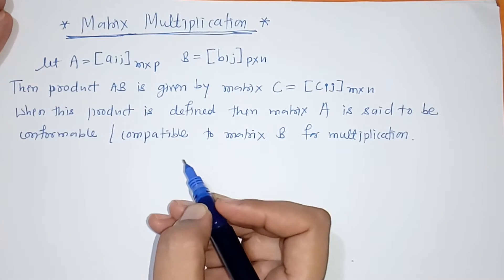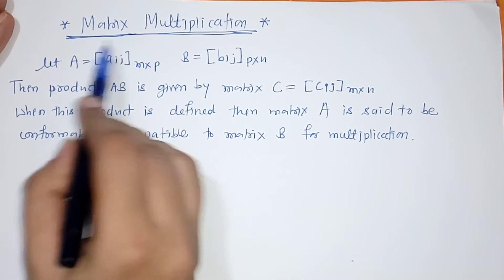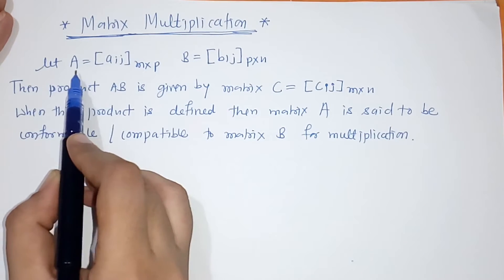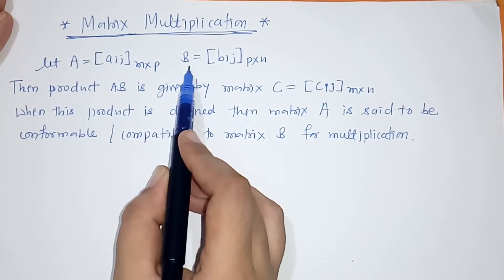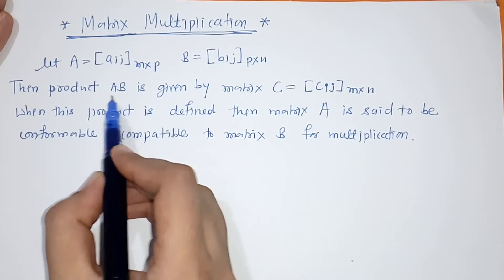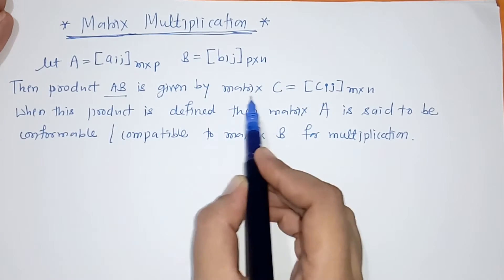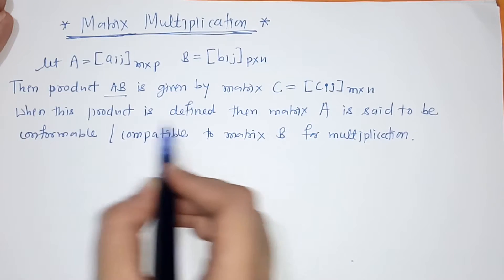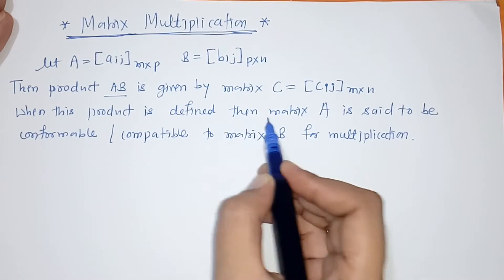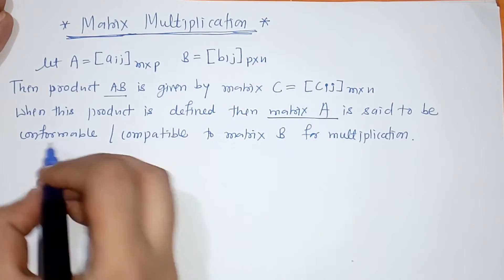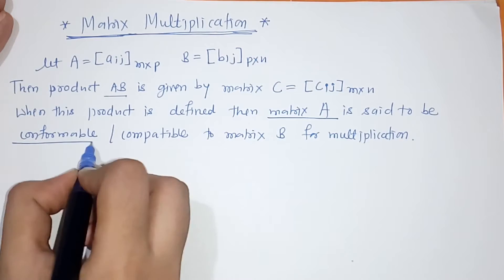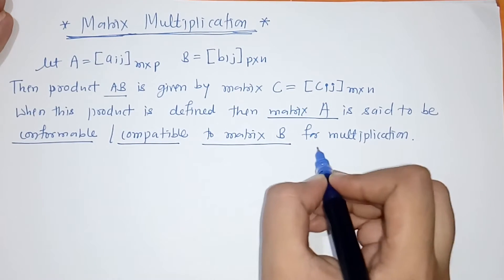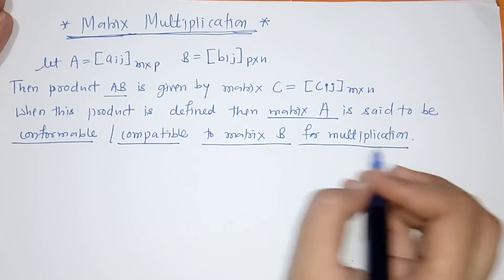Hello everyone, today we are going to see matrix multiplication. If we have matrix A and B, then the product AB is given by the matrix C. When this product is defined, matrix A is said to be conformable or compatible to matrix B for multiplication.